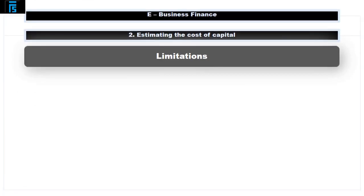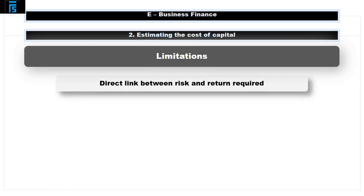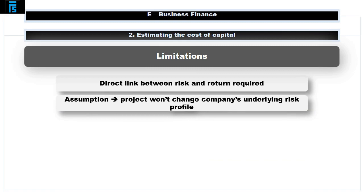The WACC formula can be expressed as the cost of equity multiplied by the market value of equity divided by the market value of equity plus the market value of debt — i.e., the cost of equity multiplied by the proportion of the total finance represented by equity. This is added to the cost of debt multiplied by the market value of debt divided by the market value of equity plus the market value of debt.